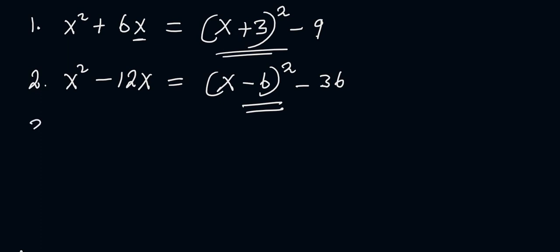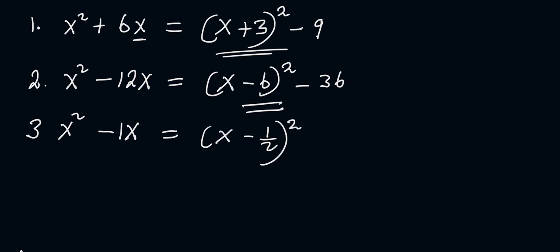Let's take another example: x squared minus x. The coefficient of x in this expression is negative 1. There is a 1 that exists here, but usually it's not written. So whenever you have just negative x, you must understand that there is a 1 that exists just before the x. So if we divide negative 1 by 2, that gives us negative one-half. Write it as x minus one-half, squared.